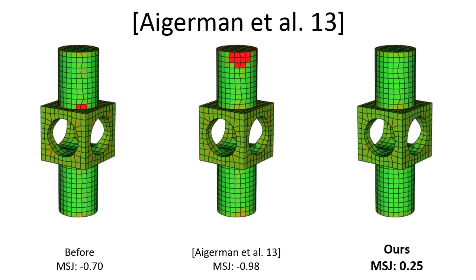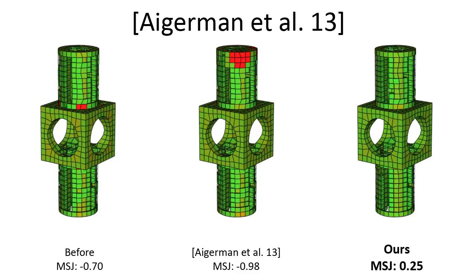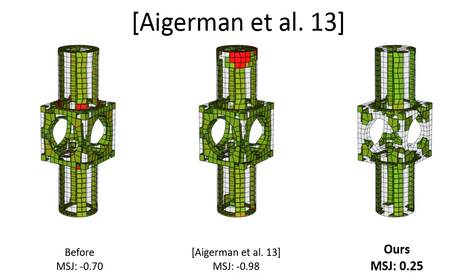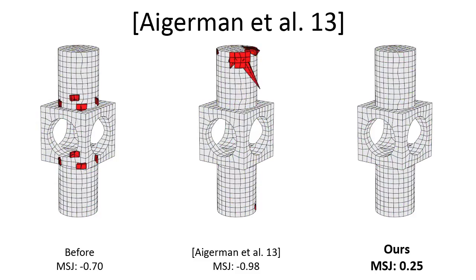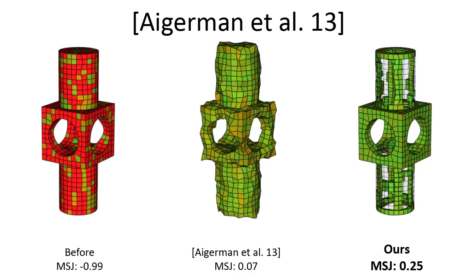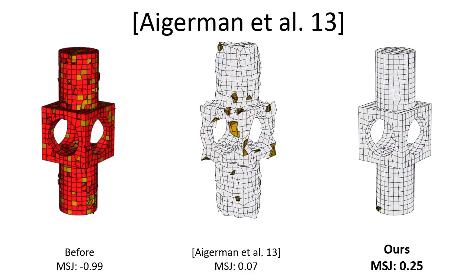We also compare our method to Eggerman et al., by treating the hex mesh as a union of overlapping tetrahedra and optimizing it with their tetrahedral optimization framework. If we run their code with all boundary vertices fixed, their method fails to untangle even simple inputs. With the boundary free to move, their output drastically deviates from the input surface.